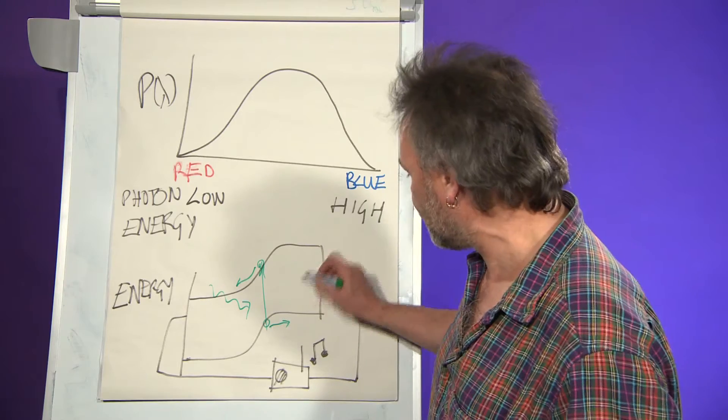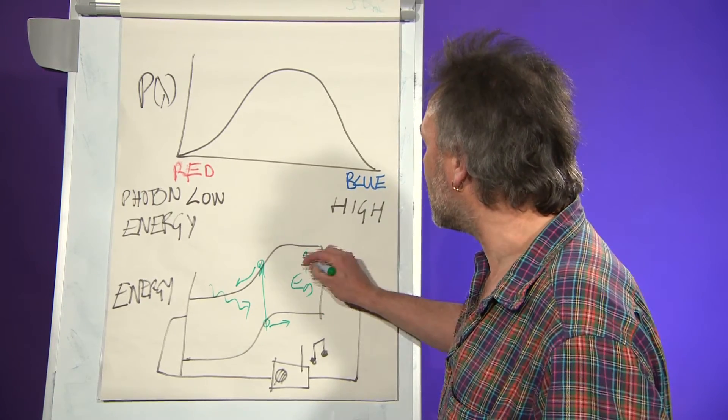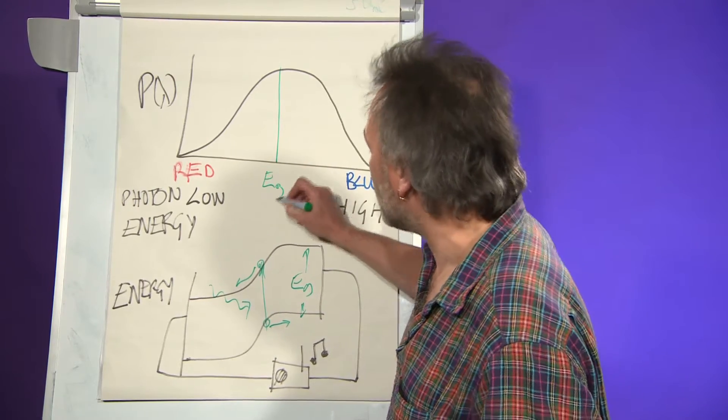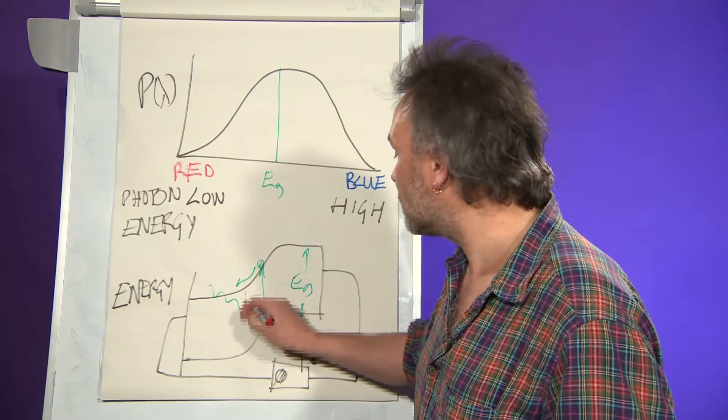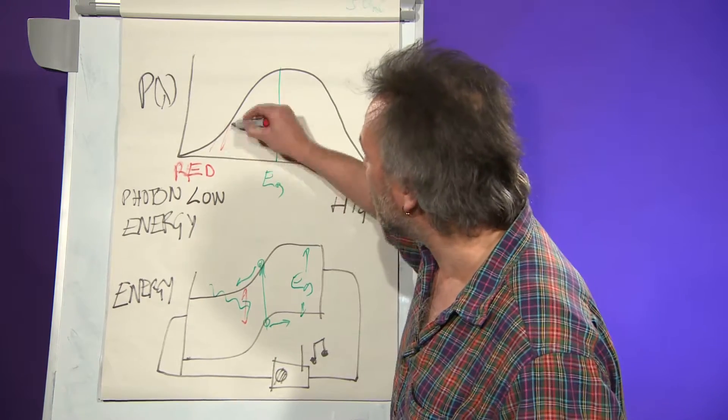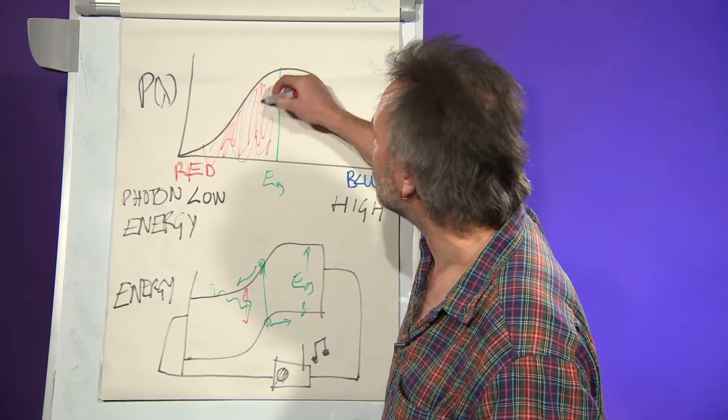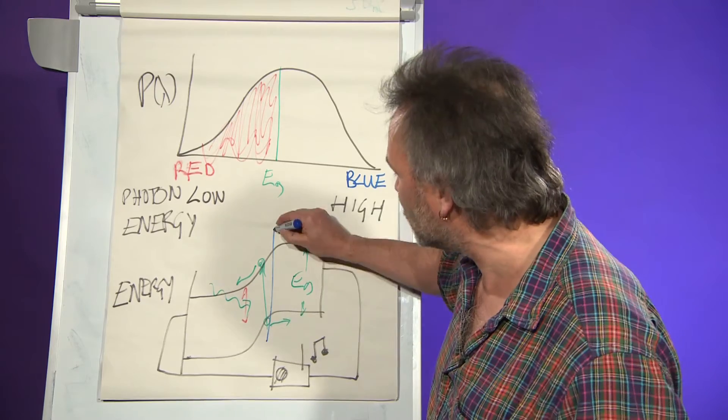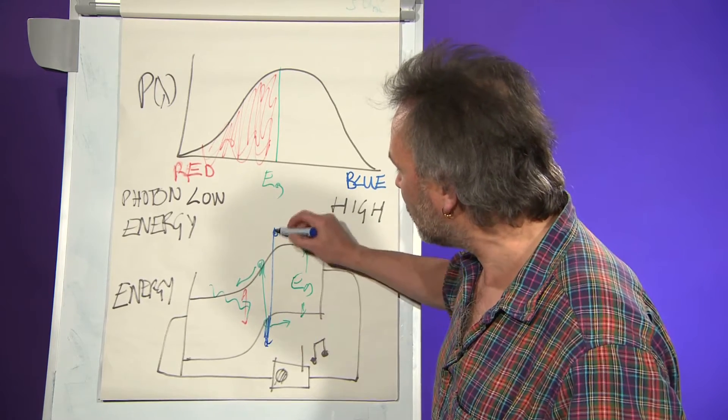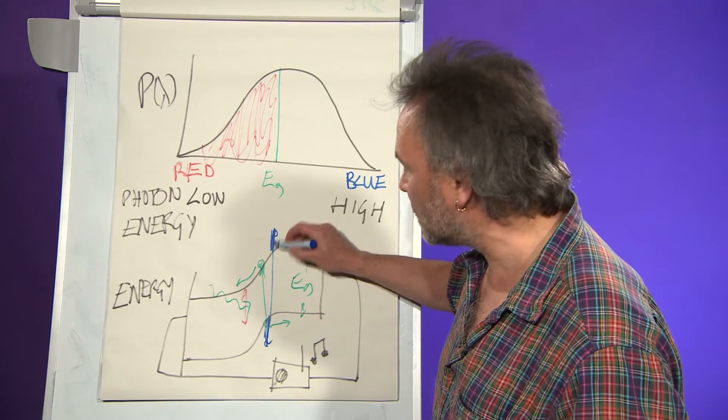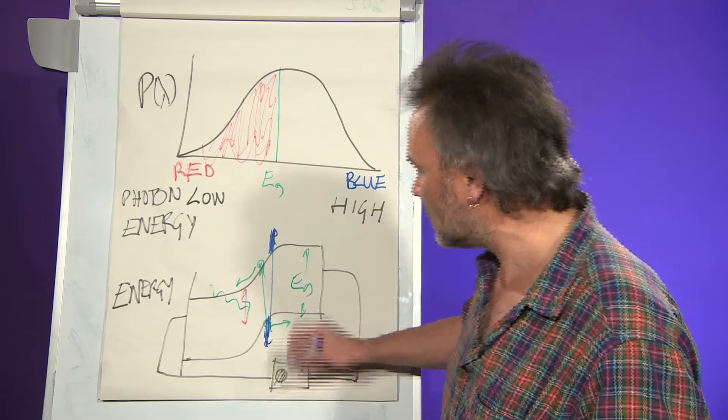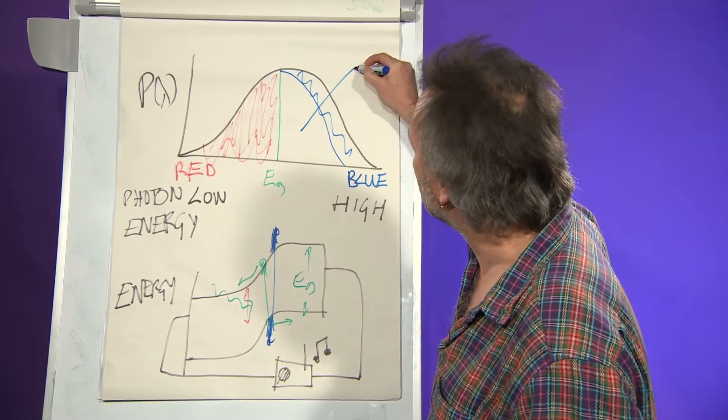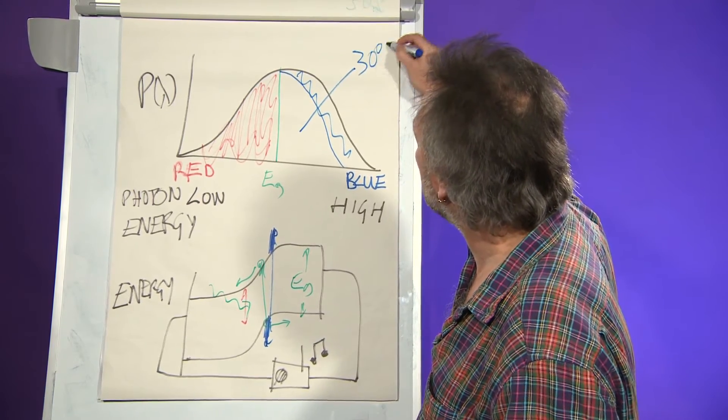But the trouble is that you set that energy step EG and if it's there on the diagram, the red photons don't have enough energy to make that jump and they all get wasted so you lose all of the power in the red end of the spectrum. And the blue ones, on the other hand, well they have too much photon energy and they create excess energy which just gets lost as heat in the crystal. So the blue bit of the spectrum you lose that bit and what's left is only about 30% of the power in the rainbow.